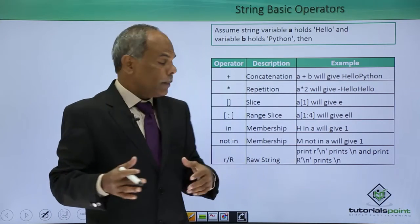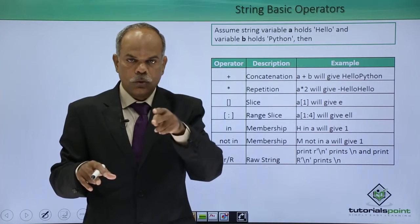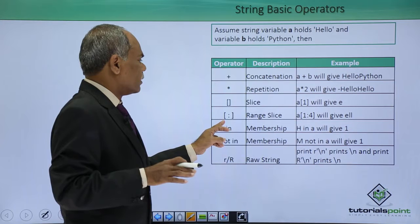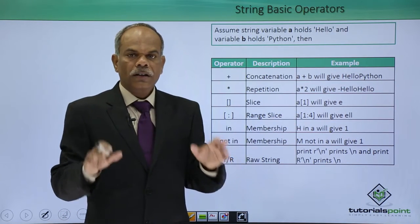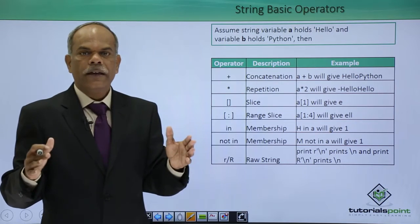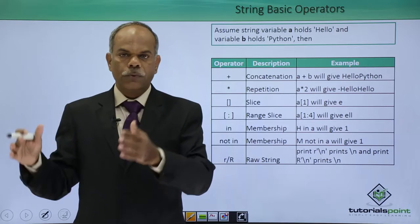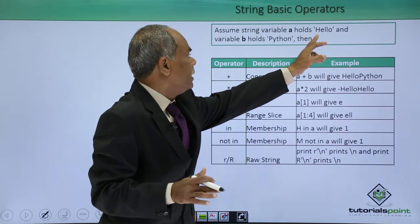There is a range slice operation also. In between the square bracket, you use a colon and there are two operands on either side of the colon. So if I say a 1 colon 4, that means a slice of the string starting from index number 1 to index number 4 will be separated. It will give me e, l, l.